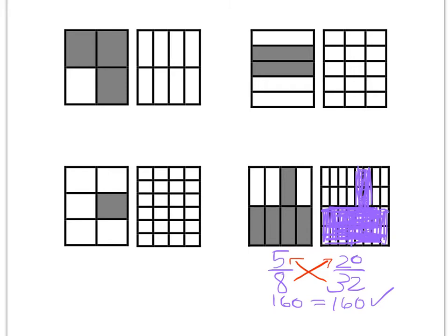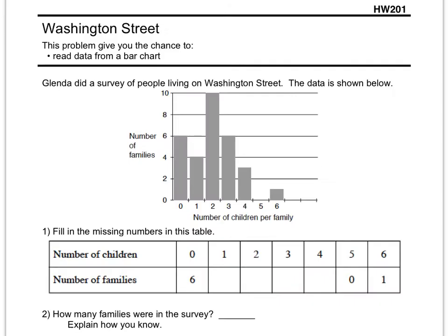Okay, and here we are on the back side with Washington Street. Glenda did a survey of people living on Washington Street. The data is shown below. Here on the vertical side of the graph, we have the number of families. And on the horizontal side of the graph, we have the number of children per family. So it tells us how many children are in each family.